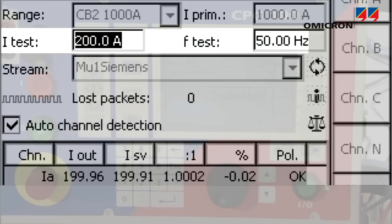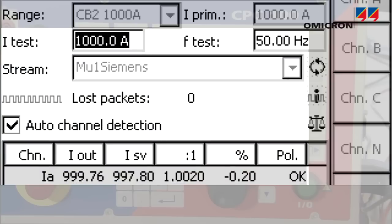When injecting primary current as set by the user, the CPC evaluates the respective stream of sampled values and displays CT ratio and polarity, just as when testing a conventional CT.